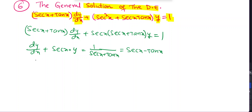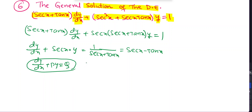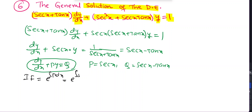This is a linear equation in y with P = sec x and Q = sec x - tan x. The integrating factor = e^(∫sec x dx) = e^(log(sec x + tan x)) = sec x + tan x.